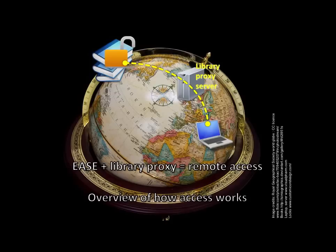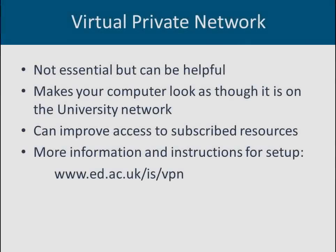Of course, the library doesn't buy access to everything that is published — no single library could. Later on in this presentation, I'll describe steps to take if you run into the situation of not getting access to a resource that you need. One thing you could do to improve access to resources is to set up a connection to the university's virtual private network or VPN. This makes your computer look as though it's on the university network and could lead to more seamless access to resources. This is not essential, but it may be useful to you. The URL on this page will give you detailed instructions on how to set up the VPN.